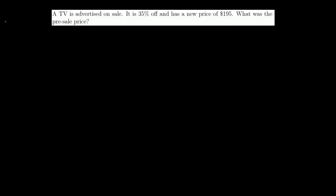They tell us a TV is advertised on sale. It is 35% off and has a new price of $195. What was the pre-sale price? So if x is the pre-sale price, when you take 35% off of that, it has a new price of $195. So x minus 35% of x, 0.35 is the same thing as 35%. So if I take x and I subtract 35% of x from x, I'm going to get $195.